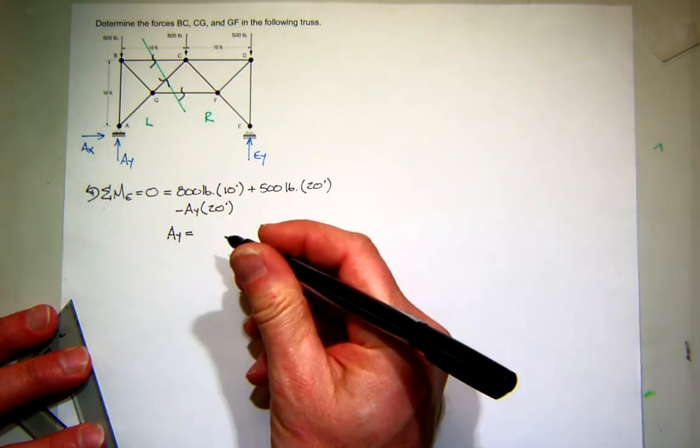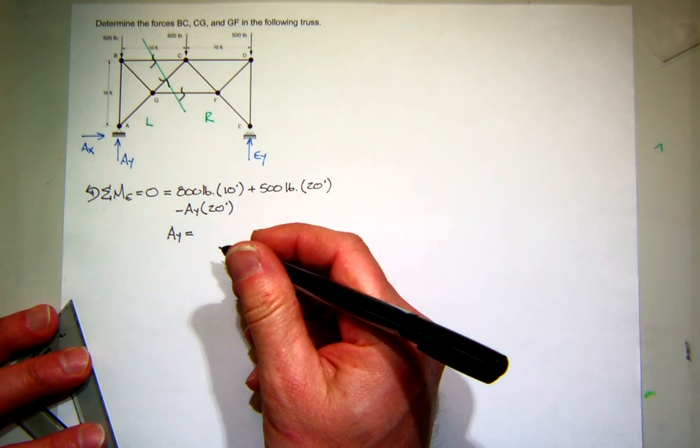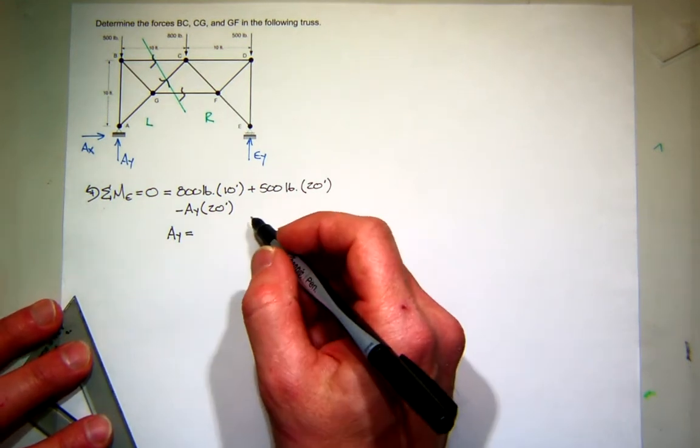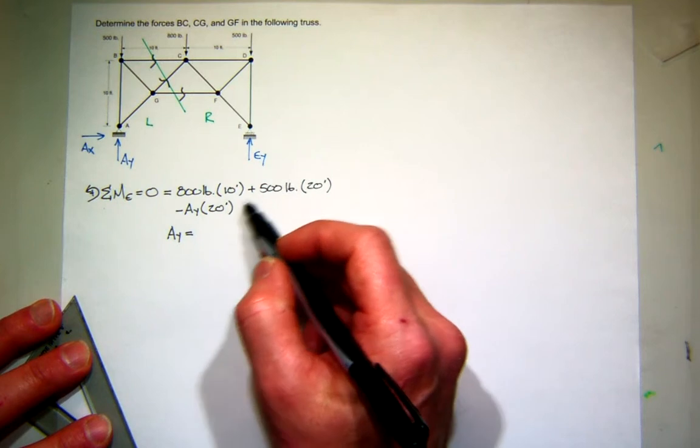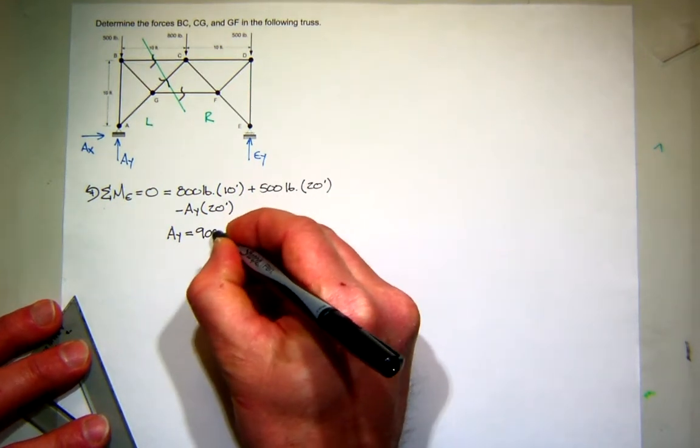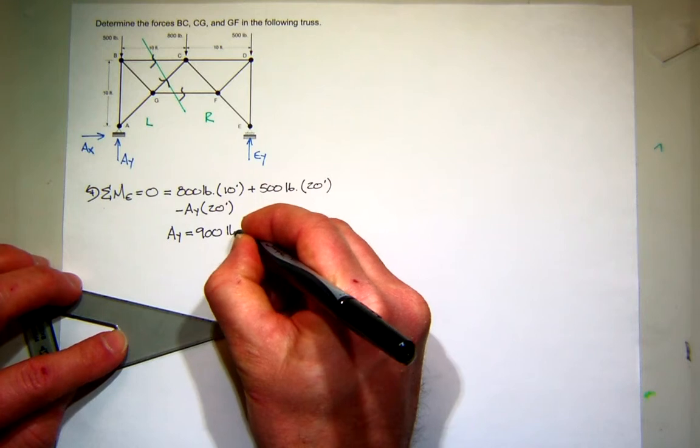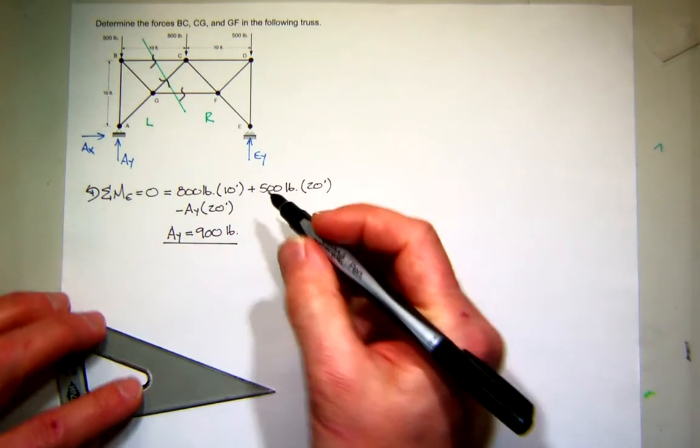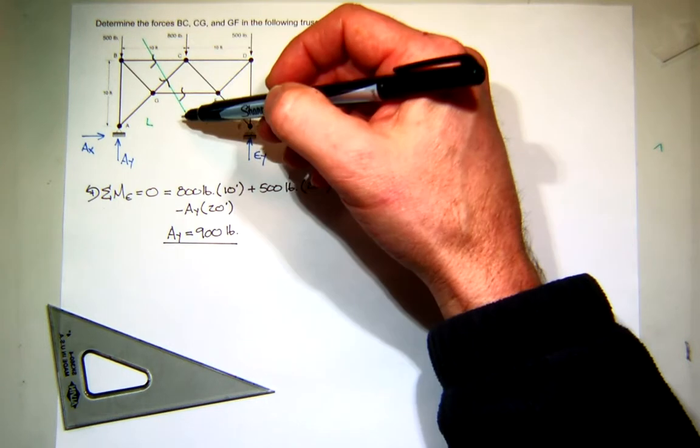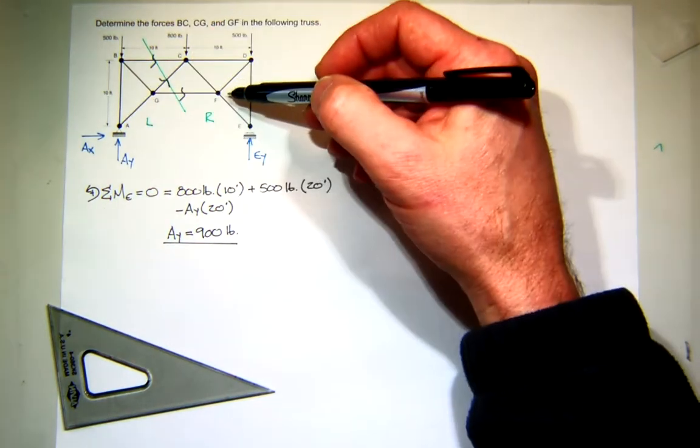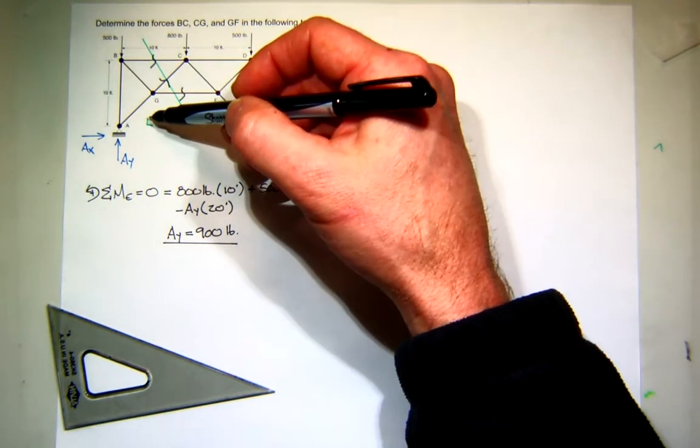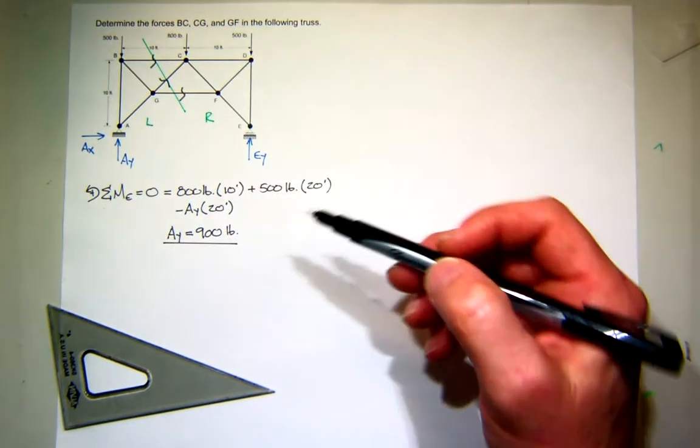So it looks like the answer is 900. Does that sound okay? There's a couple of ways to see that. Again, you'll notice the load is symmetric and the geometry is symmetric. So if you add the total load up, you get 1,800 pounds, half to one side, 900, half to the other side, 900. Does that make sense?